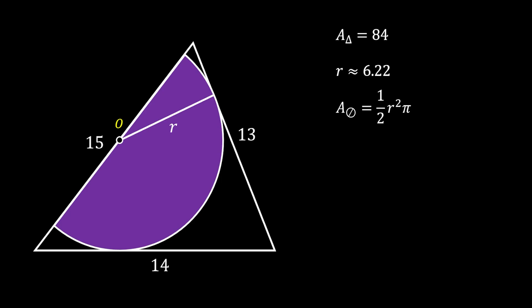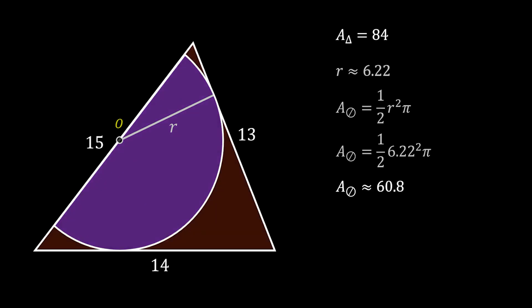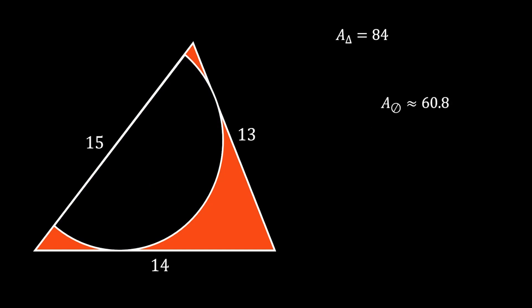Now, we can substitute the value of R and get that the area is equal to the following. Now, we can simplify this and we will get that the area of our half circle is approximately equal to 60.8 squared units.